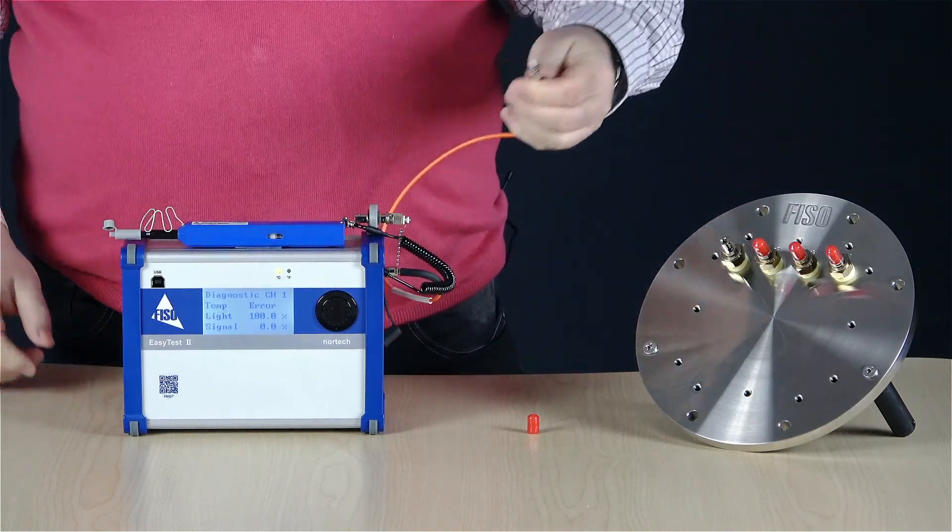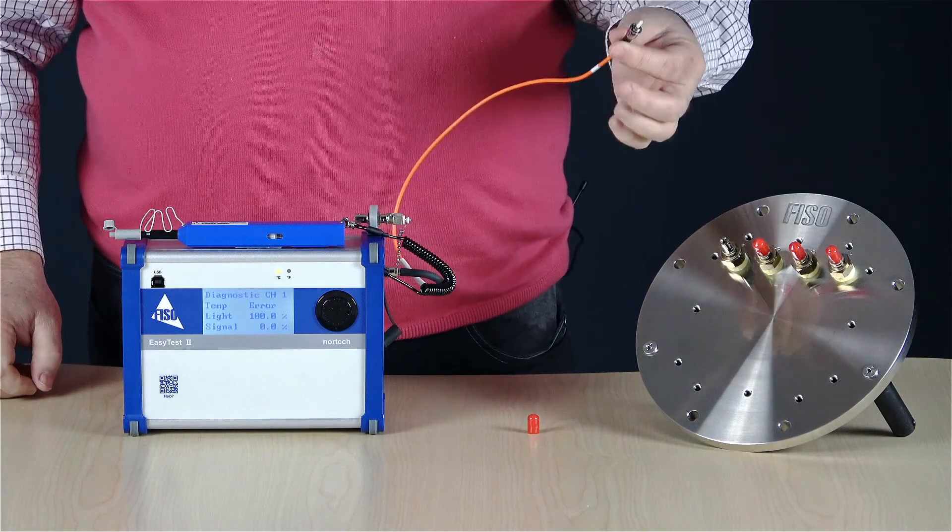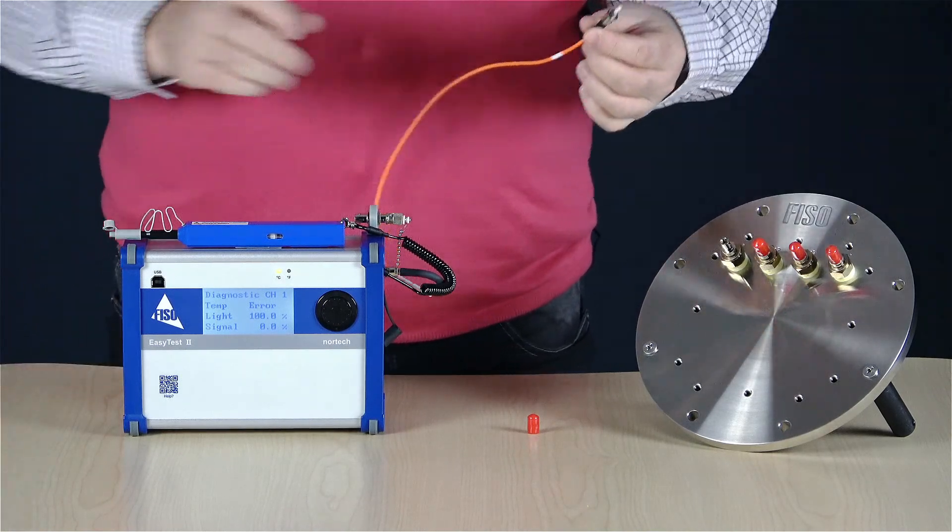To proceed with that, use the port saver and use it as a fiber extension to test the sensors off the plate.